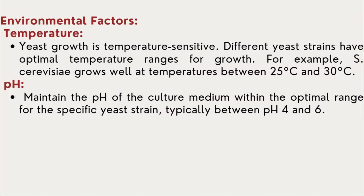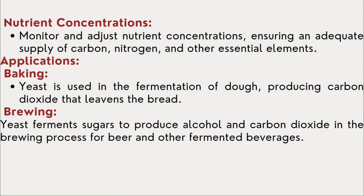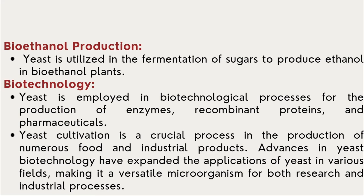The environmental factors which influence yeast growth: Saccharomyces cerevisiae grows well at temperatures between 25 to 30 degrees Celsius. The pH range is mostly acidic — they require a typical pH between 4 to 6. We need to ensure that all the nutrients are intact while culturing yeast. Applications: yeast is used in fermentation and baking industries; in bioethanol production, yeast is utilized in fermentation of sugars to produce ethanol; and in biotechnological aspects, they are widely used in production of enzymes, recombinant proteins, and other pharmaceuticals.